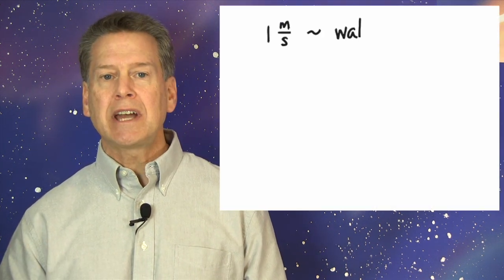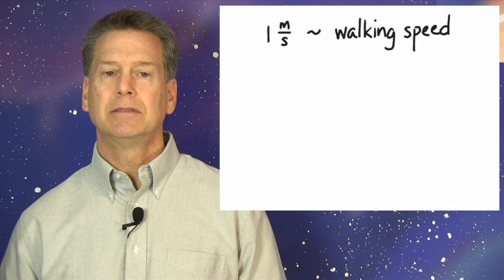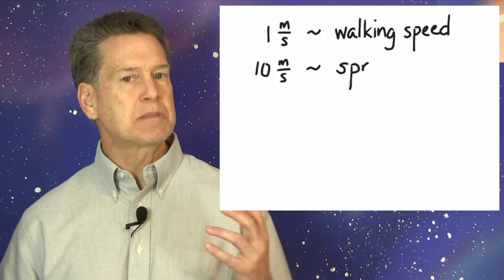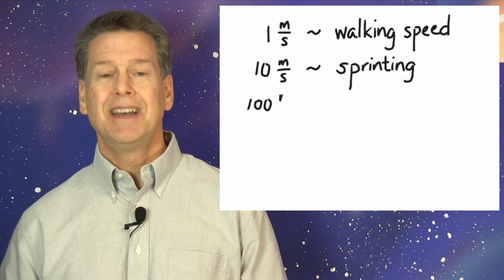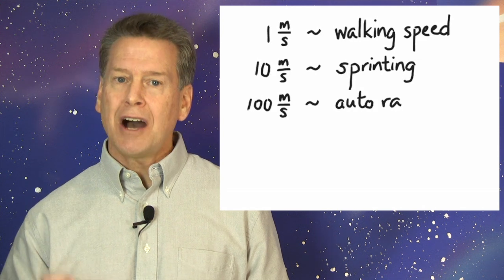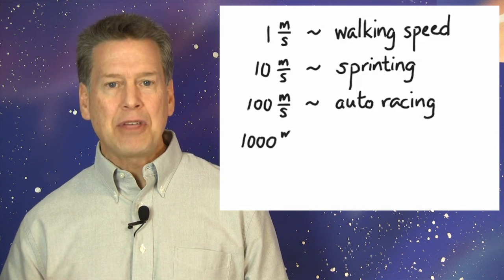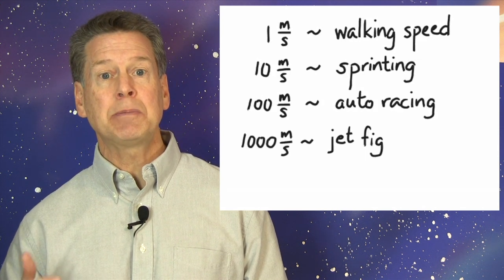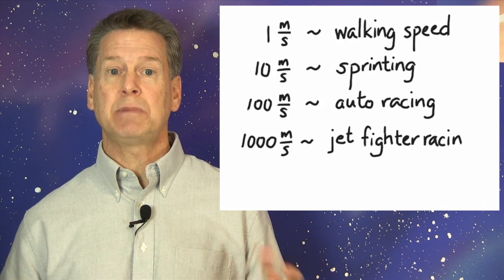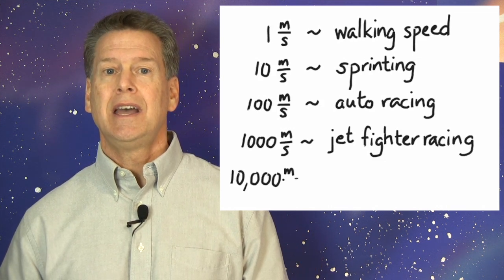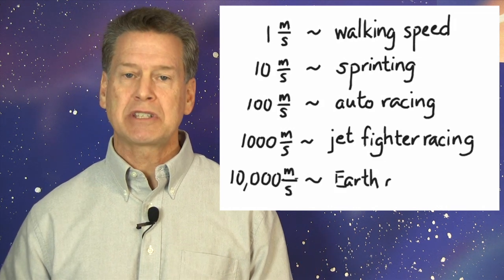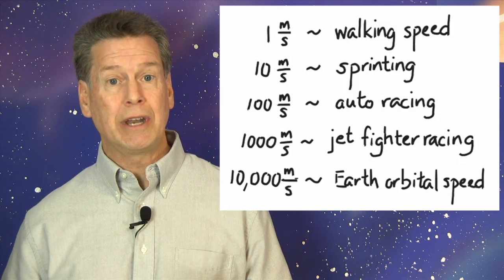Better yet, try to get used to the meter per second all by itself. 1 meter per second is walking speed. 10 meters per second is sprinting fast. 100 meters per second is auto racing speed. 1,000 meters per second, 1 kilometer per second, that's jet fighter speed, Mach 3. And 10,000 meters per second, 10 kilometers per second, that's orbiting.